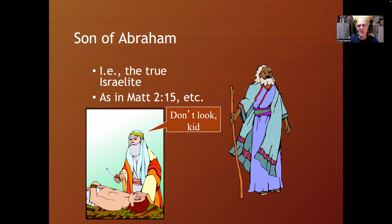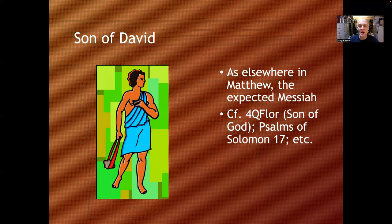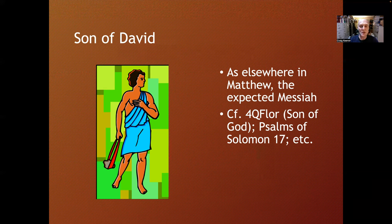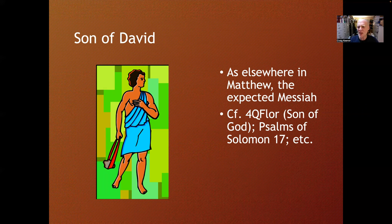Matthew 1:1 introduces the genealogy as 'the book of the Genesis of Jesus Christ' — that's the Greek translation of Genesis 5:1, which is where Genesis gets its name in English. Usually in Genesis, genealogies record descendants, because they depend on you. But Matthew doesn't record Jesus' descendants — he records his ancestors, turning it the other direction. Because ultimately all of this history was pointing towards Jesus. God brought all this to bear in history to point to the climax in Jesus, son of Abraham, who embodies the heritage of his people.